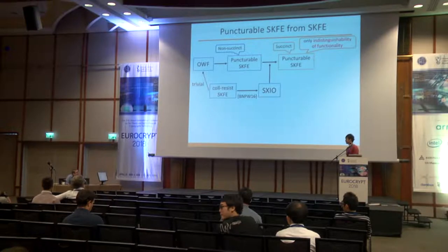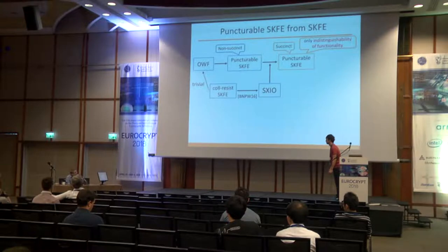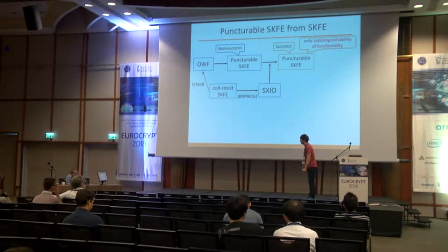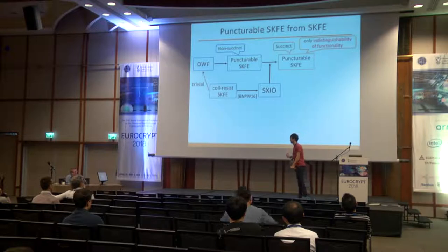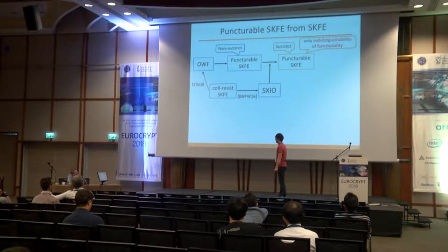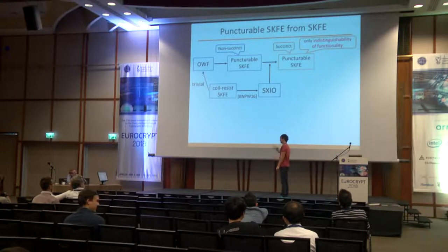Question: How hard is it to build a collusion-resistant SKFE? It's essentially as hard as building I.O. — it's very difficult. It still requires multilinear maps so far.